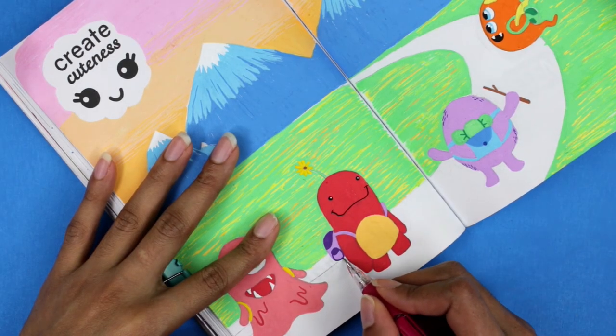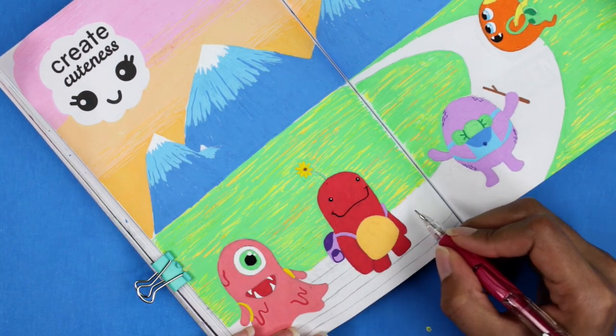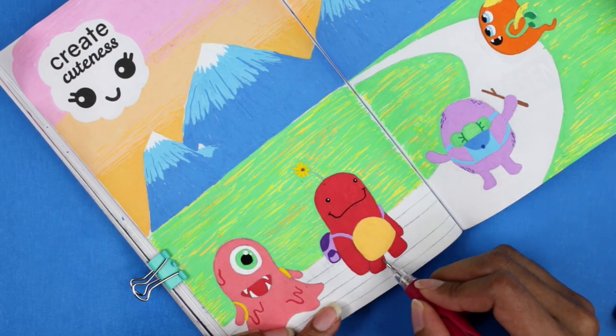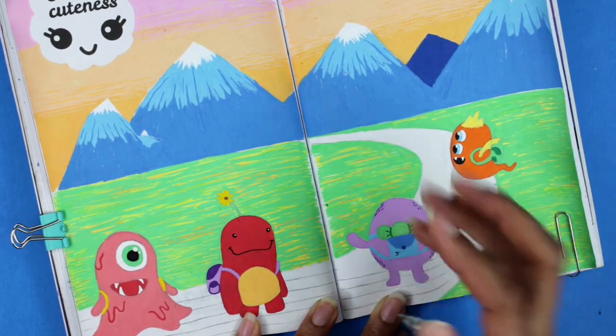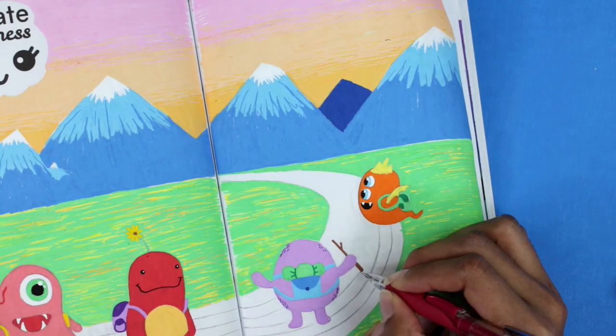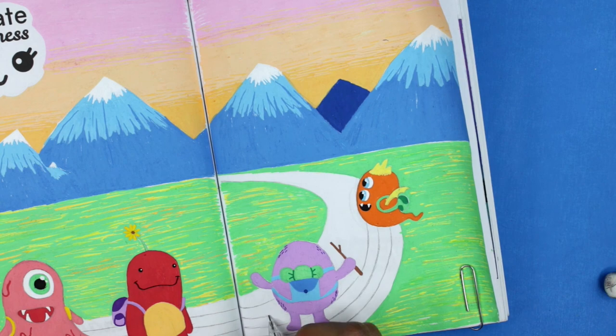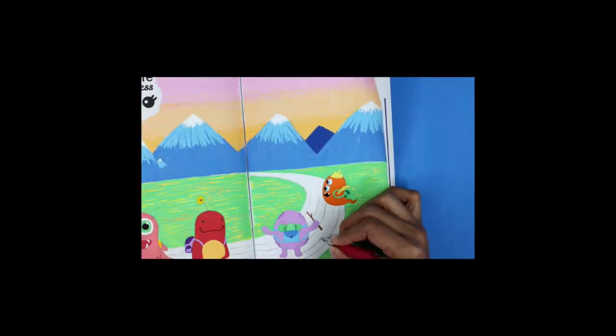Okay, so they found the rainbow and followed it. Now they are on this rainbow trail that's supposed to lead them to the rainbow kingdom, or at least that's what they think. You know, it could be a trap or not. They're gonna find out when they get there. But now I have to find a way to fit 6 colors on this tiny little space.